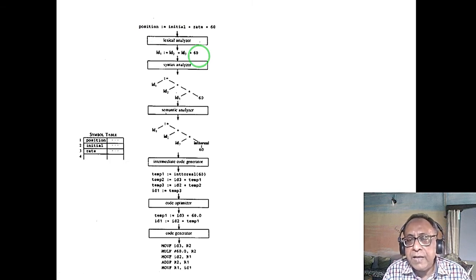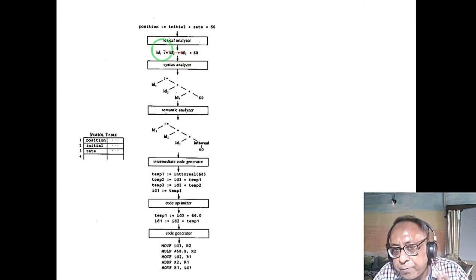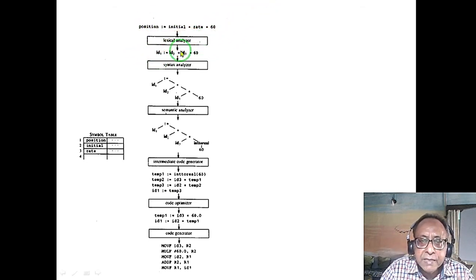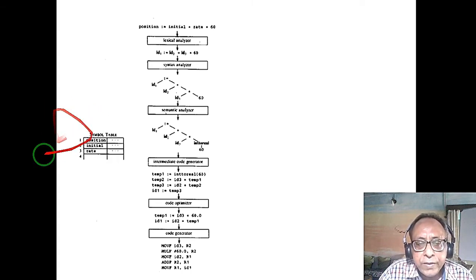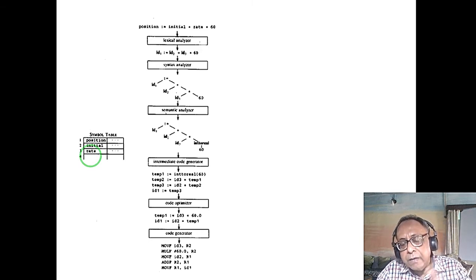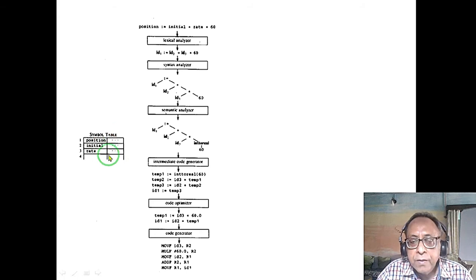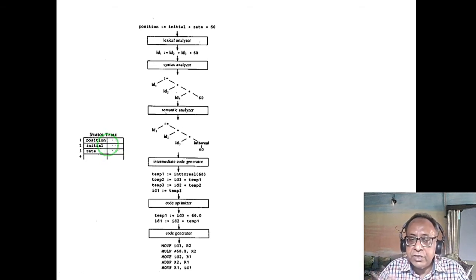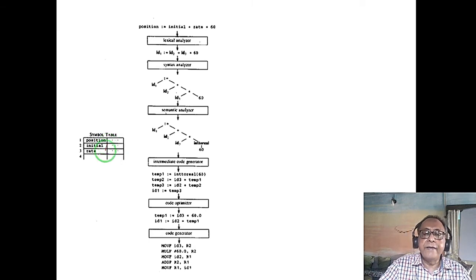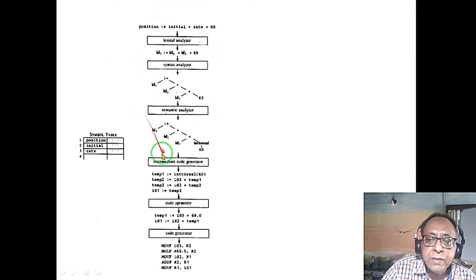The symbol table must be maintained across all compiler stages, stored in primary memory for fast access. It cannot simply be an array or linked list — it should be a hash table, possibly multiple hash tables for different modules. The hash table size should be at least twice the number of variables. The symbol table stores variable names, scope, data types, and function parameter types, covering both variables and functions.